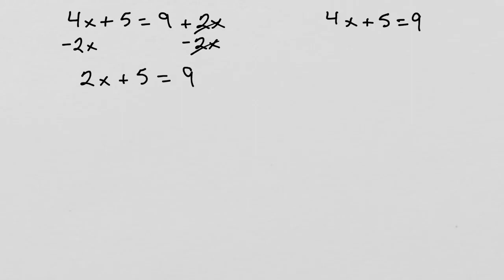We now have a familiar two-step equation, which you should be able to solve if you've watched our previous videos. But let's go over it. We want to get rid of all the numbers attached to the x, so we can have x alone on one side of the equation. To achieve this, we know that we must get rid of the times 2 and the plus 5.